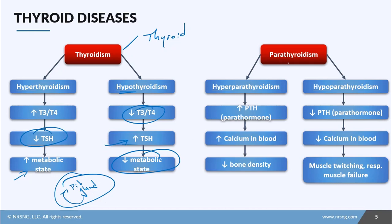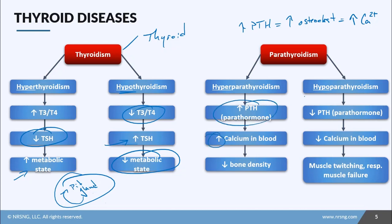With the parathyroid gland, we look at hyperparathyroidism and hypoparathyroidism in terms of parathormone. With hyperparathyroidism, there is increased production of PTH. Since PTH has a direct relationship with blood calcium, an increase in PTH leads to an increase in osteoclast production. With osteoclasts breaking down bone, there's an increase in blood calcium. However, because so many osteoclasts are working, it actually causes a decrease in bone density.